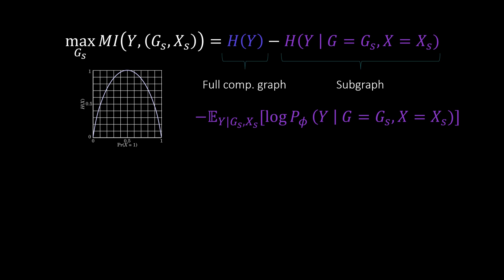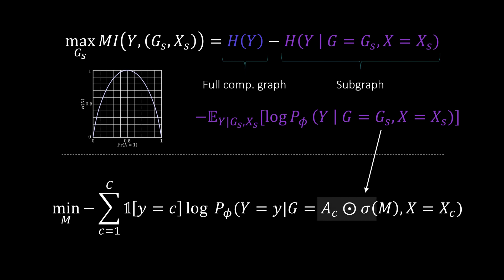There is one more obstacle that we need to get out of the way and that is the fact that there are exponentially many subgraphs GS. Instead of trying out all of them the authors propose to use a continuous mask on the computation graph. This leads us to this final formula. We can see that the subgraph GS is now replaced by this term and this is simply an element-wise multiplication of the adjacency matrix of the computation graph with a learnable mask. The overall optimization problem is now reduced to constructing a mask that finds the subgraph that maximizes the mutual information.